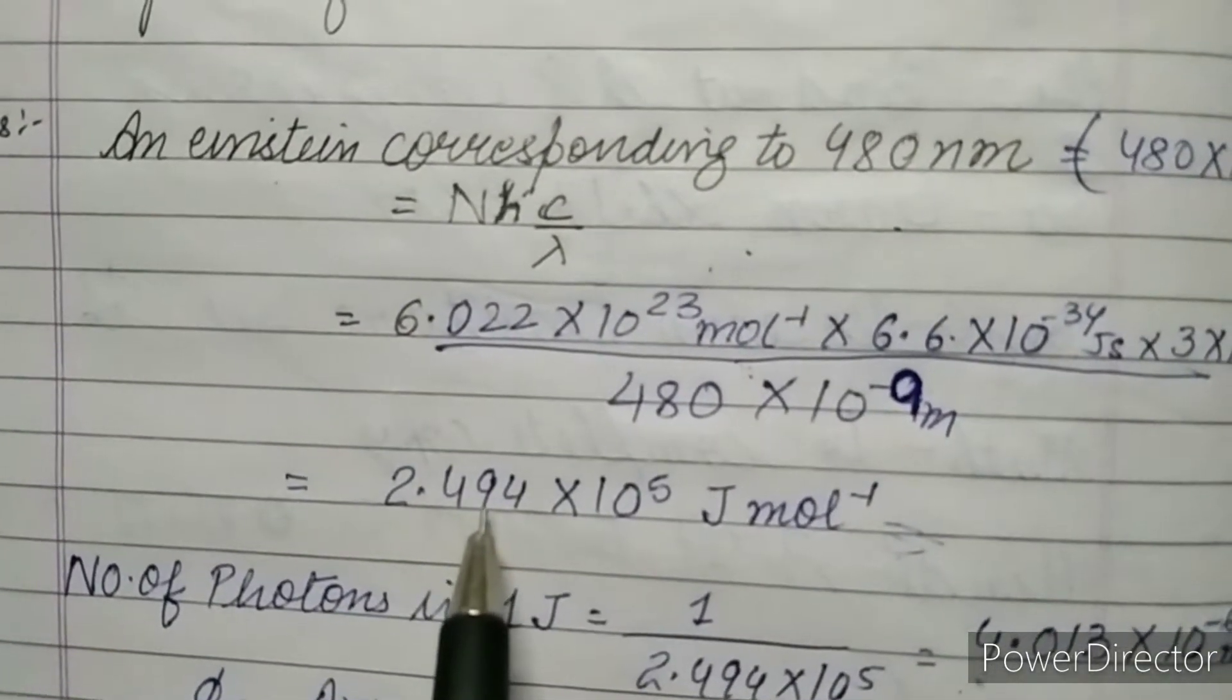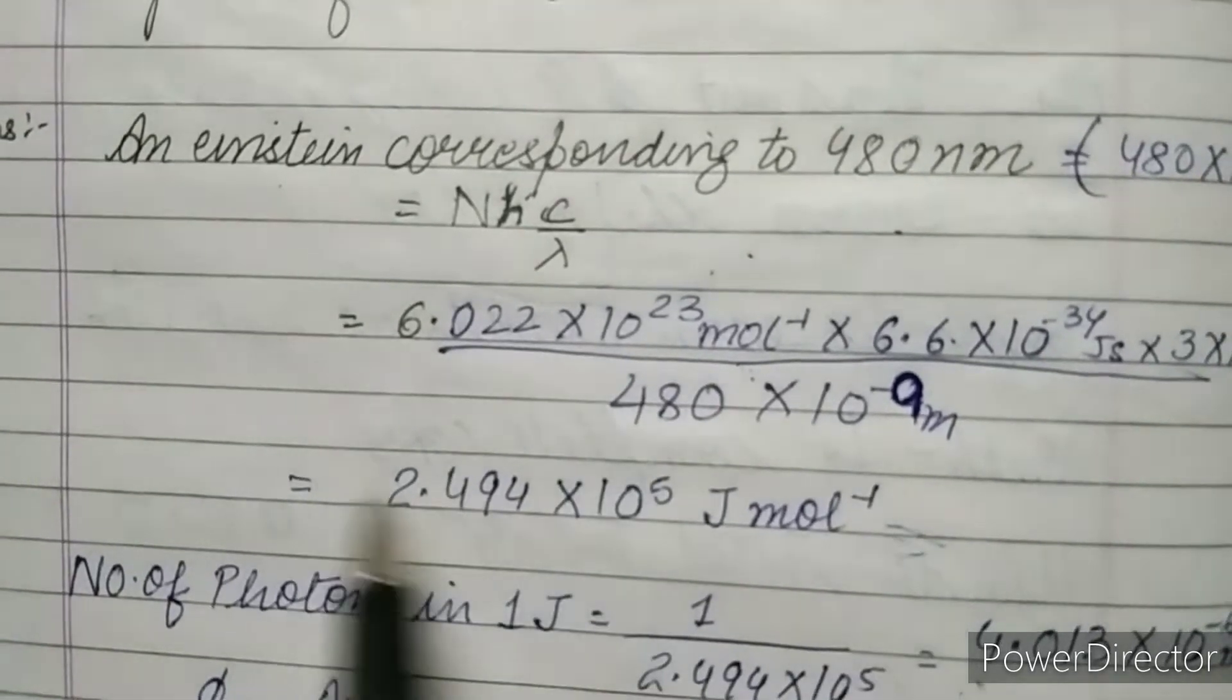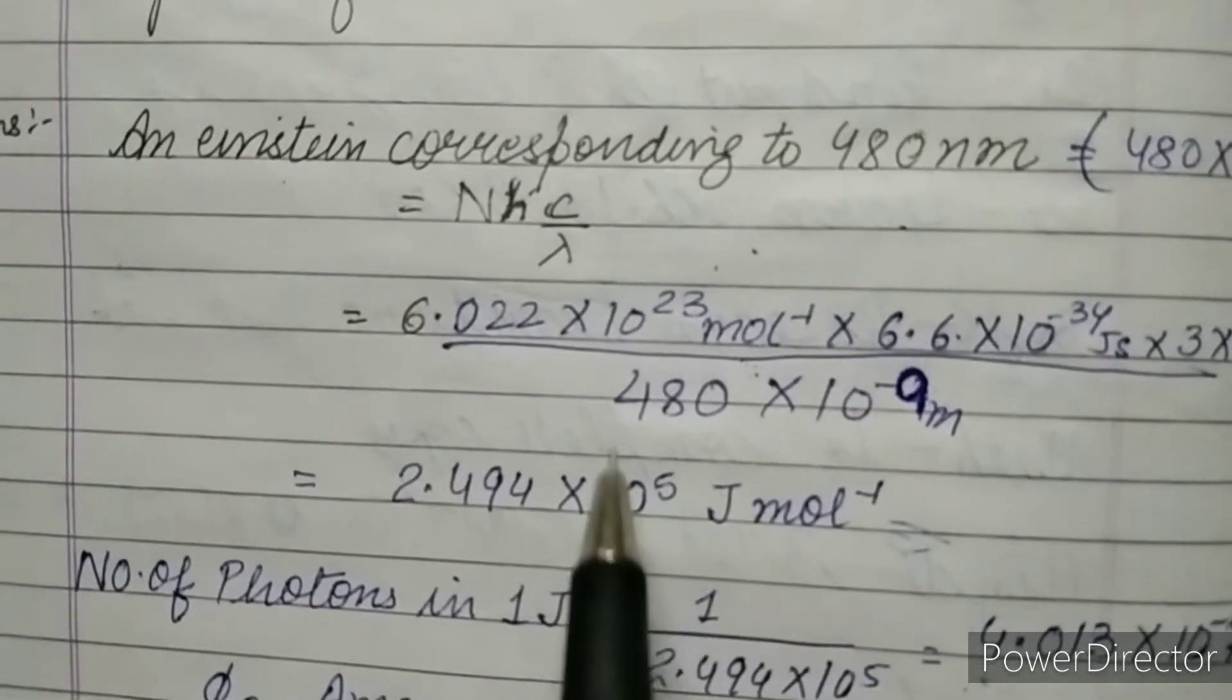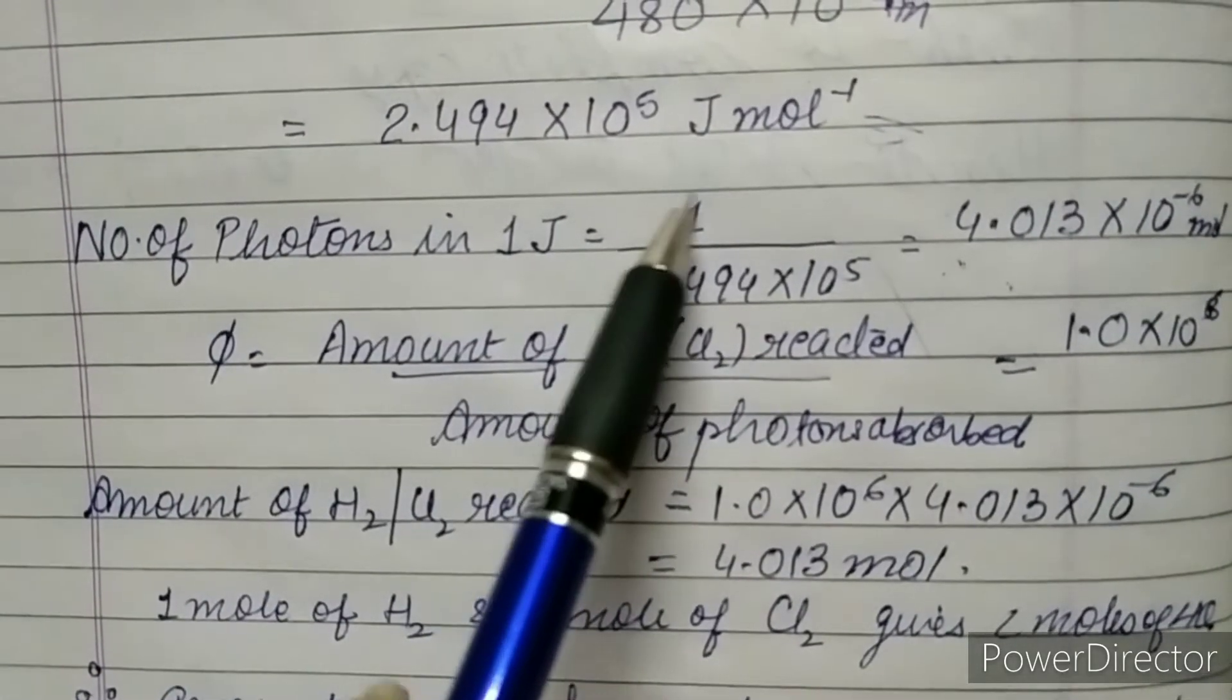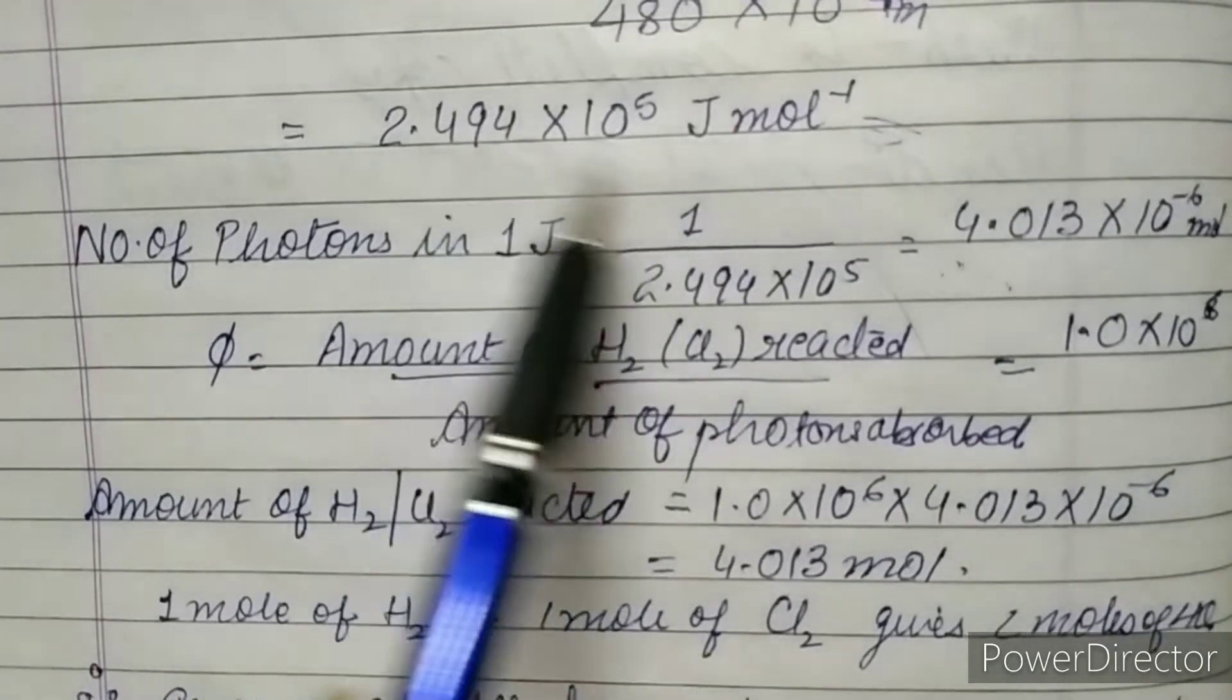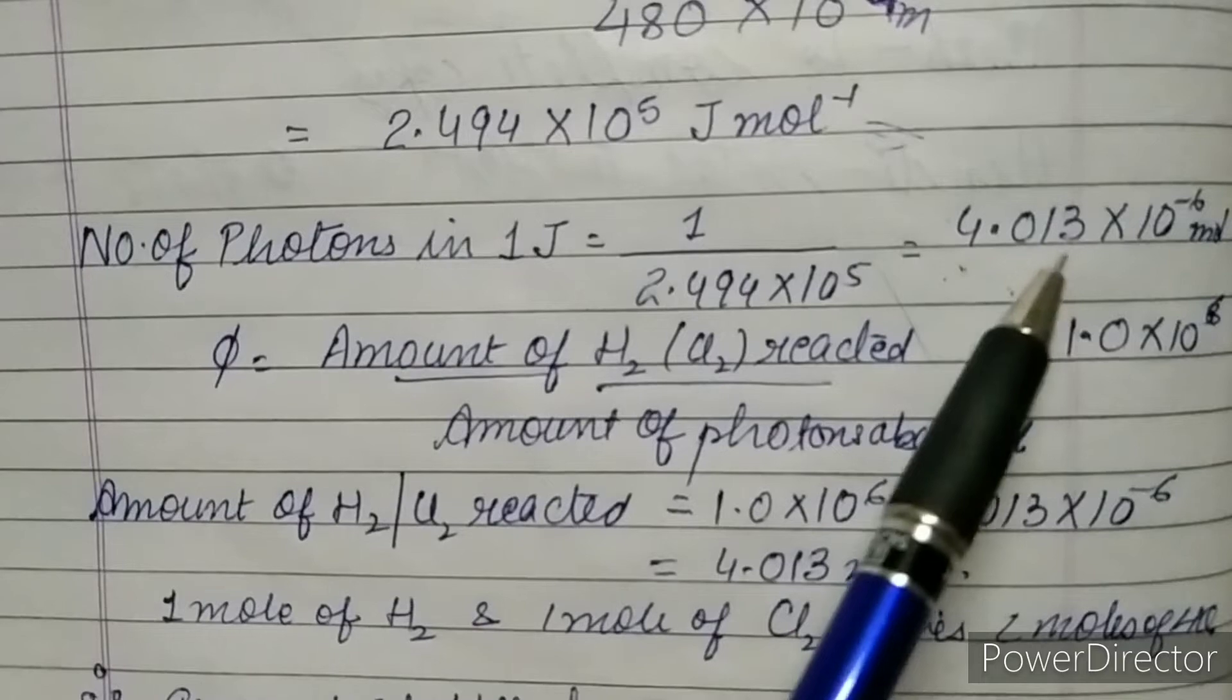After solving this what we got is 2.494 × 10⁵ joule per mole. That is the number of einsteins. Now we have to find out the number of photons in 1 joule. So what we are going to do is divide 1 joule with the number of einsteins that we have found out.